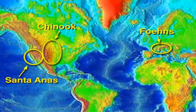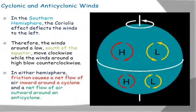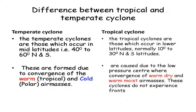Cyclones generally bring destructive weather conditions, and anti-cyclones bring calm weather conditions. Now children, the difference between tropical cyclone and temperate cyclone: temperate cyclones blow in the temperate region, between 40 to 60 degree latitudes in both hemispheres, while tropical cyclones occur in the tropical region between 10 to 30 degree latitudes in both hemispheres.